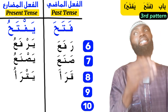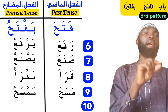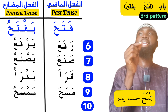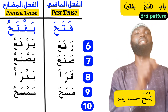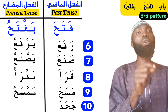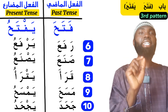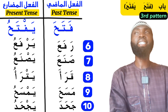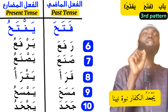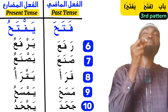Another example is masaha — 'to rub or to wipe.' The present tense is yamsahu. An example: yamsahu jismahu biyadih — 'He is wiping his body with his hand.' Another word is jahada — 'he denied.' The present tense is yajhadu, meaning 'he is denying.' An example: yajhadu al-kuffaru nubuwata nabiyyina — 'The disbelievers are denying the prophethood of our prophets.' Yajhadu is the present tense of jahada and falls under the pattern fataha yaftahu.